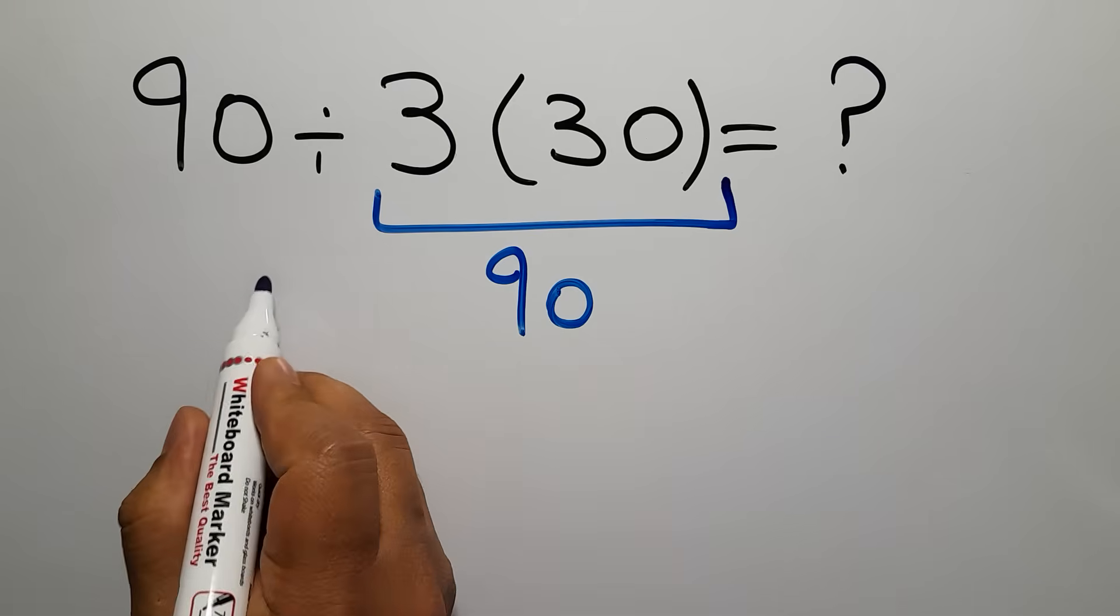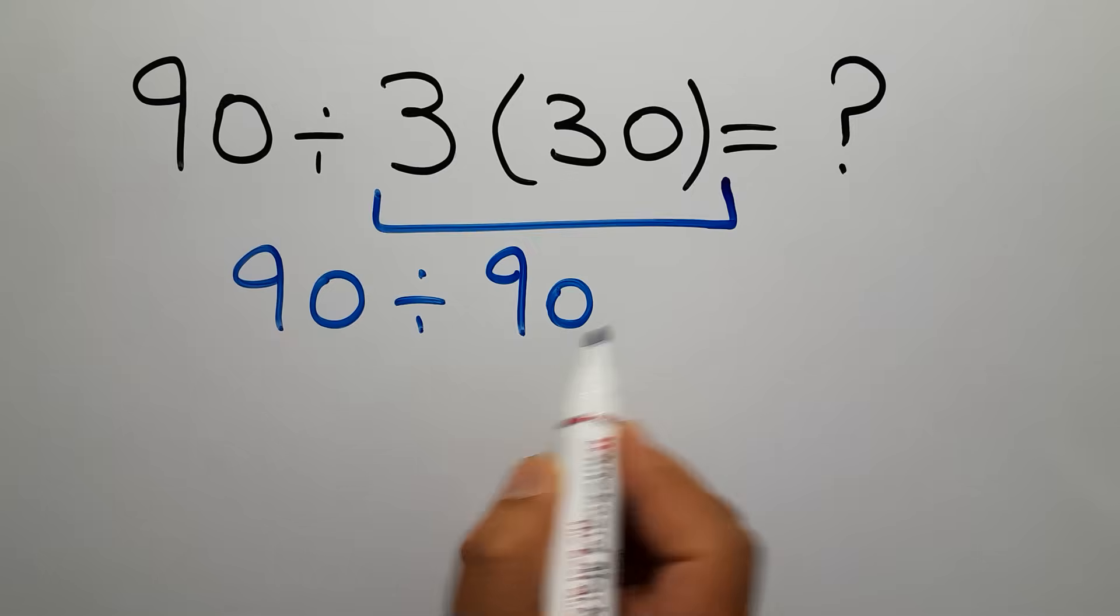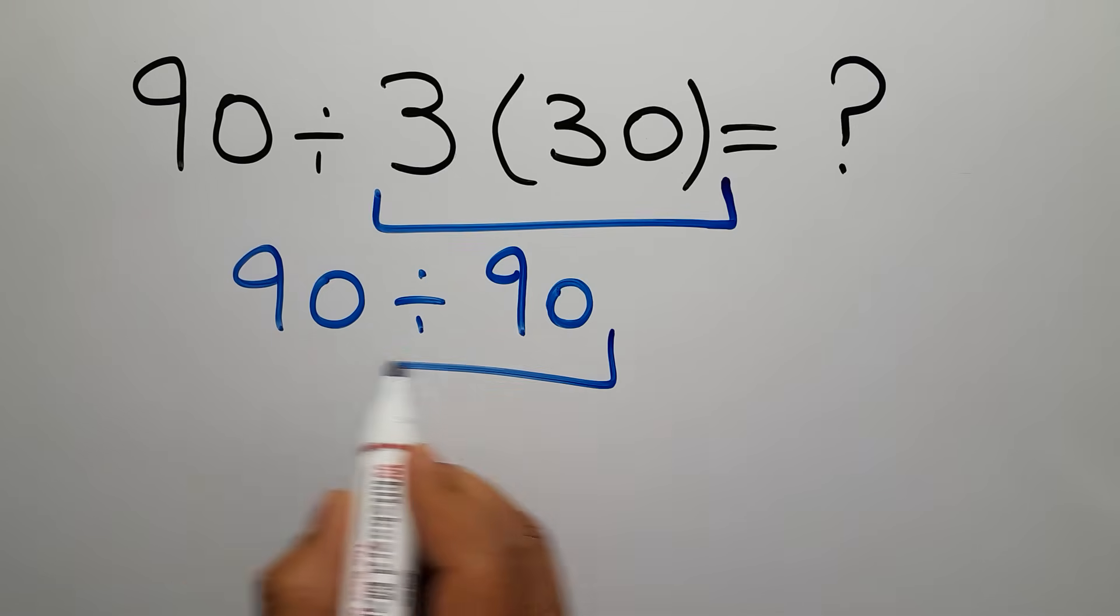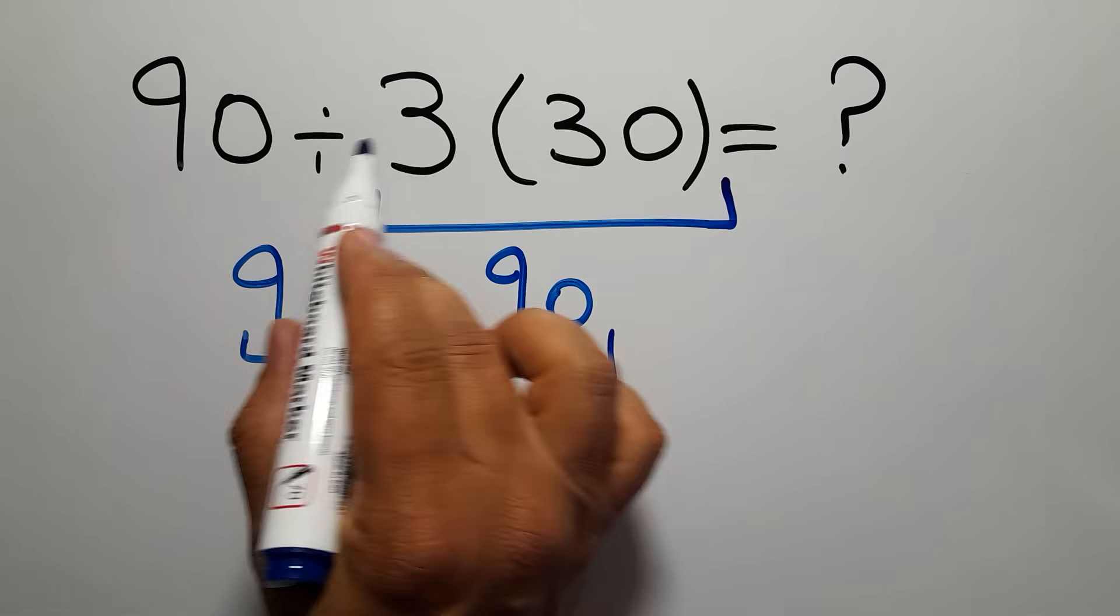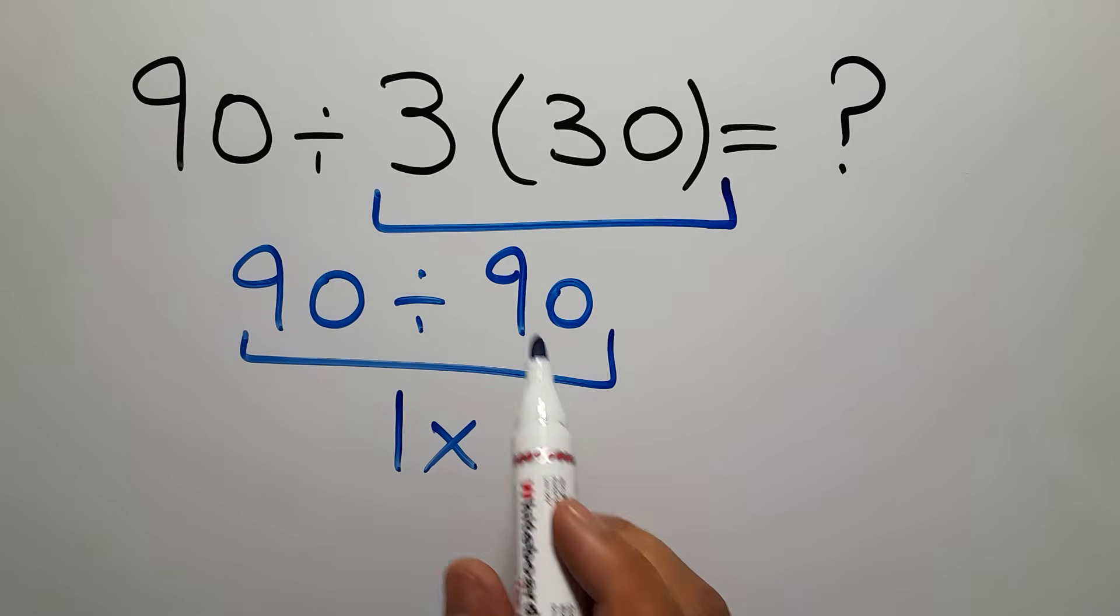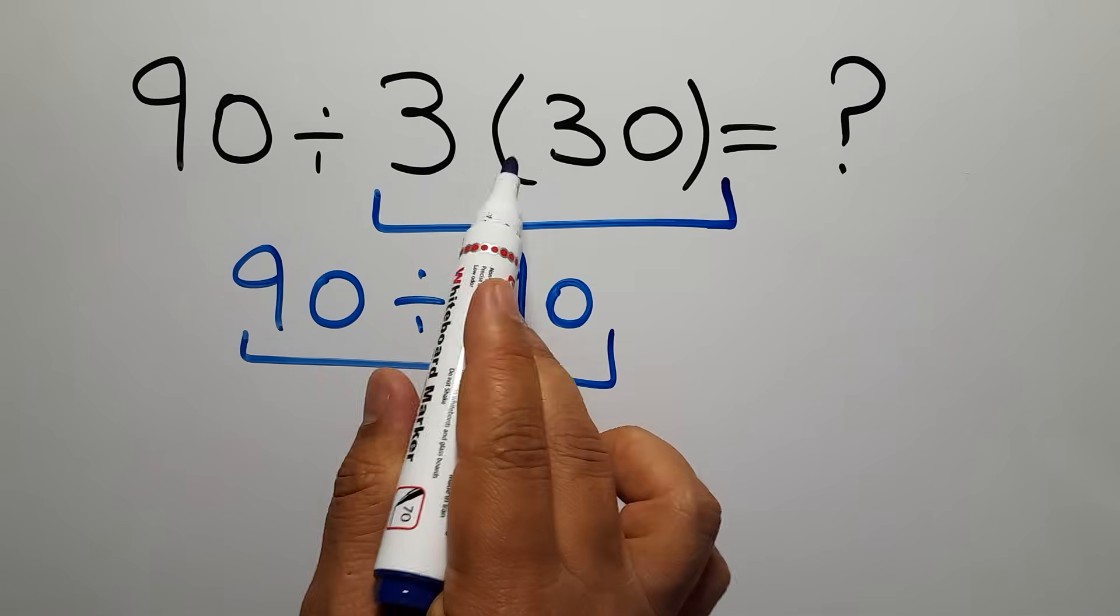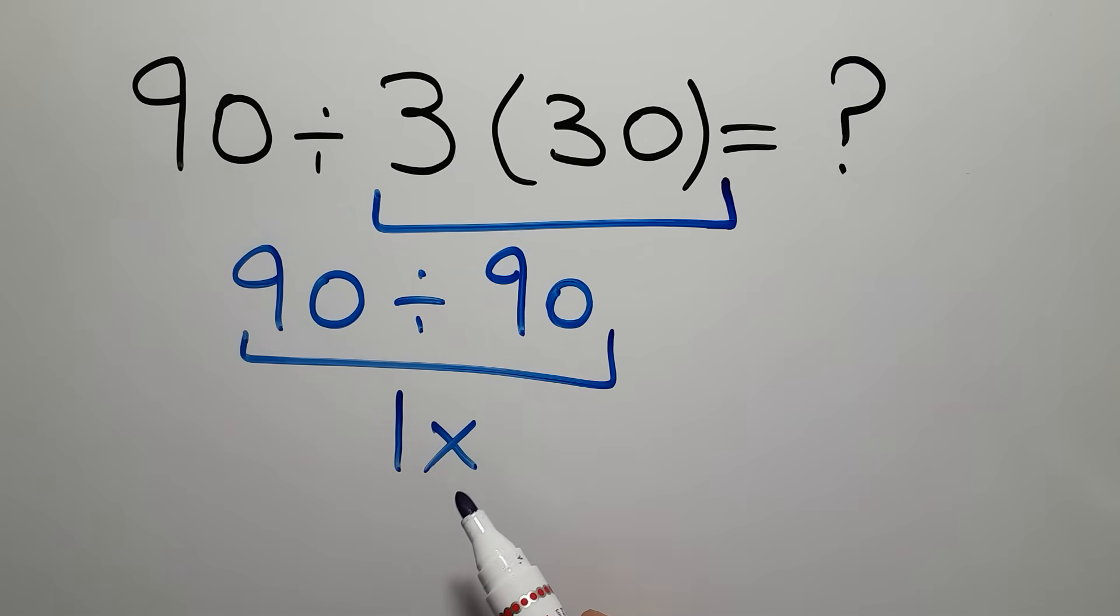And 90 divided by this 90 gives us 1. But this answer is not correct because multiplication and division have equal priority and we have to work from left to right. In mathematics,